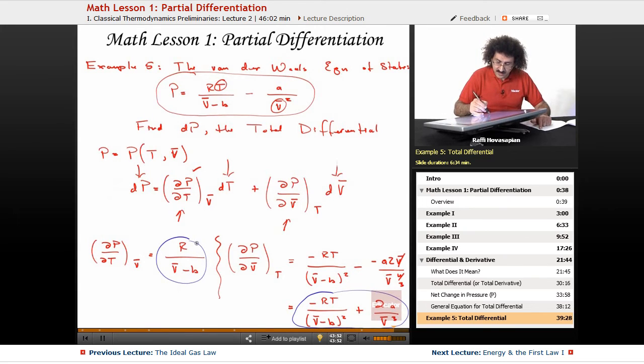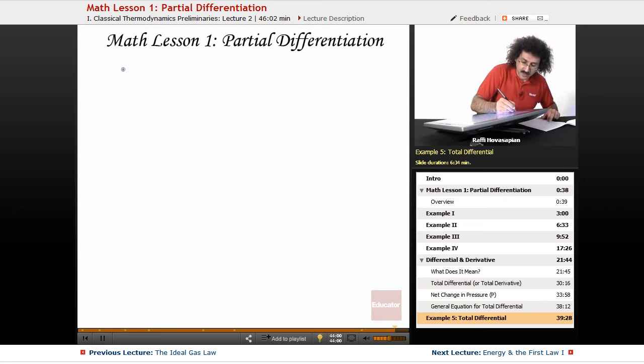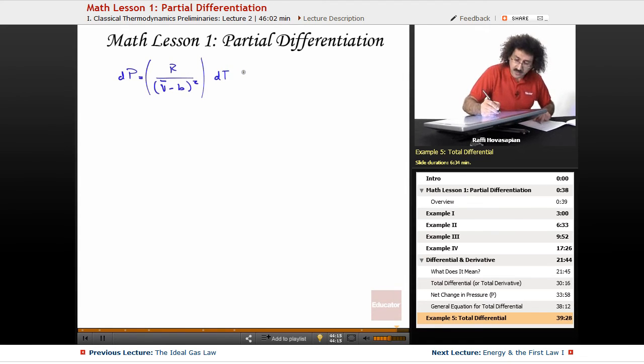Well, now that I have this and this, I plug them in to here and here. And I have my final expression, the total differential of P is equal to R over V minus B squared times dt plus minus RT over V minus B squared.